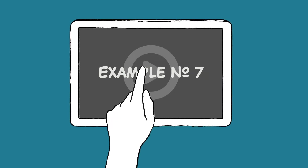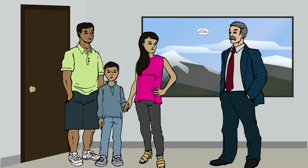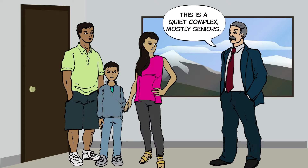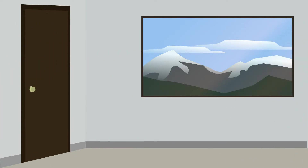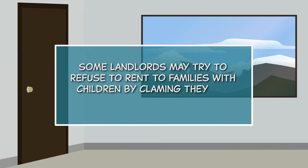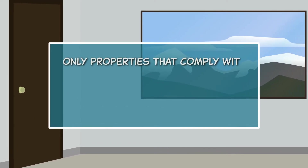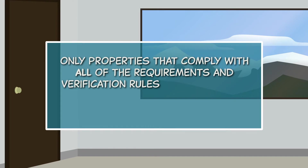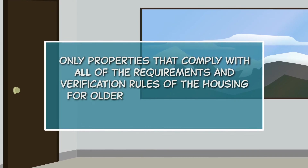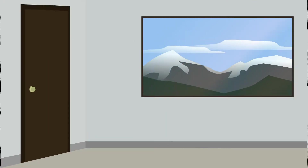A landlord refusing to rent to a family because they have children. [Landlord]: This is a quiet complex. Mostly seniors. So our rentals are adults only. Some landlords may try to refuse to rent to families with children by claiming they are senior or adult housing. Only properties that comply with all of the requirements and verification rules of the Housing for Older Persons Act can limit rentals to people age 55 and older.